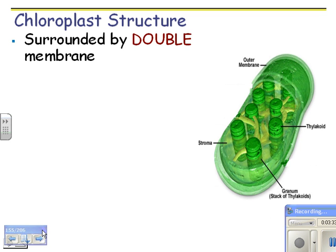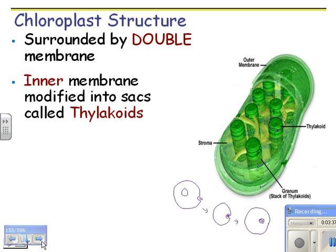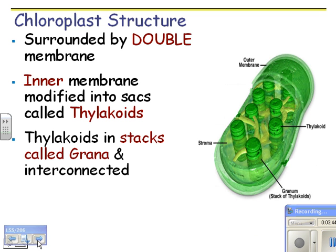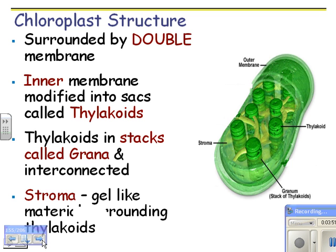Chloroplast structure summary: they are surrounded by a double membrane. The inner membrane is modified into sacs, and each of these sacs is a thylakoid. Thylakoids in stacks are called grana, and they're all interconnected — tubes actually connect one stack to another stack. The stroma is the gel-like material surrounding the thylakoids, similar to the cytosol in a cell, except this is inside an organelle.